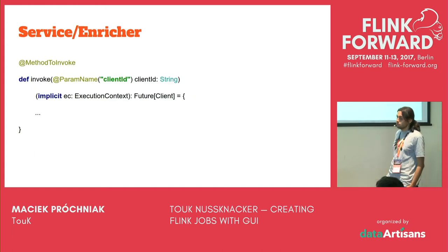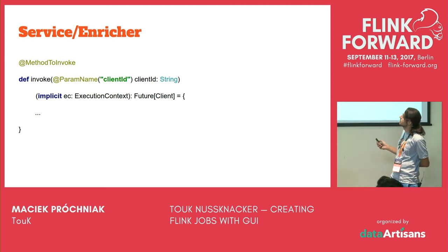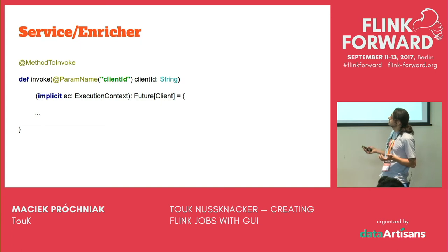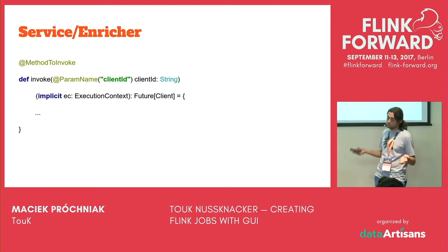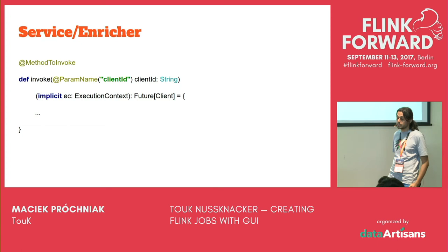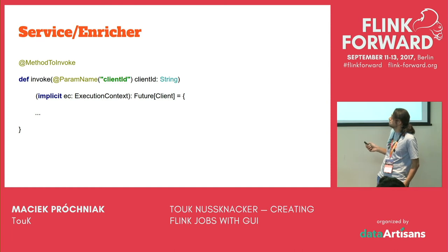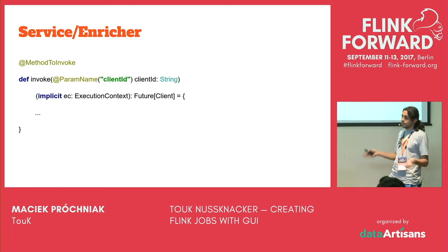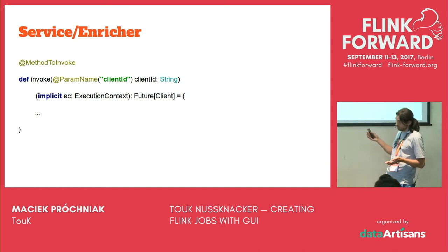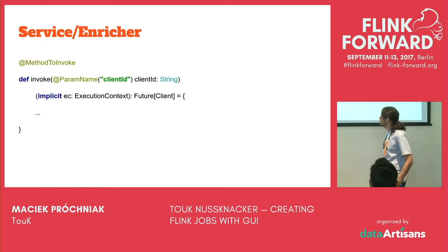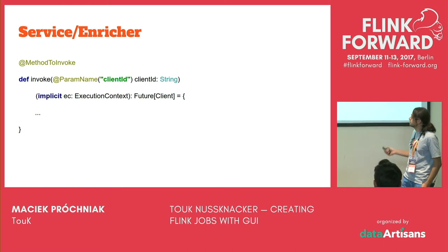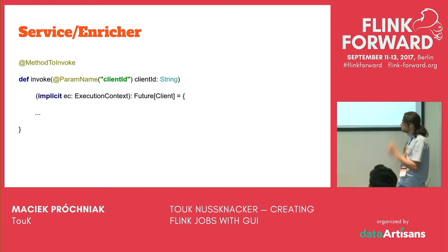For example, if you want to implement a service that takes a client ID from your Kafka stream and loads data from an external database or Redis cache, you implement just one class. You annotate it with some parameters which indicate the method, and annotate parameters so that we can build a nice form in the UI for the user to fill in. Then you implement the logic — Redis client — and return the result.